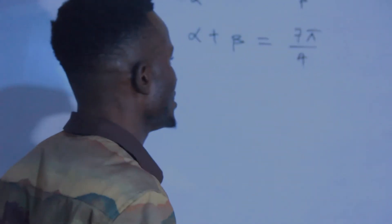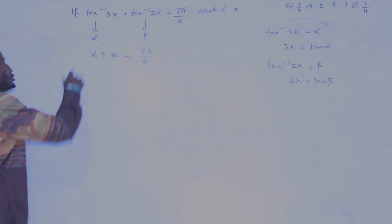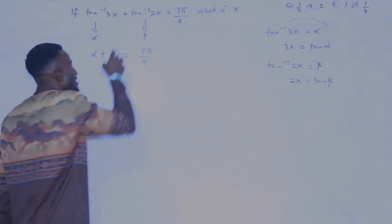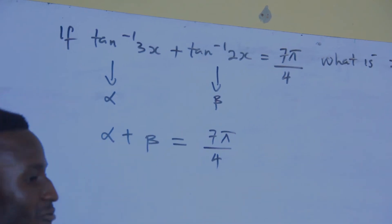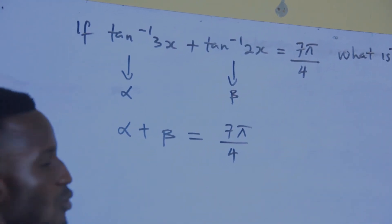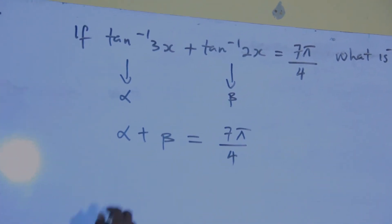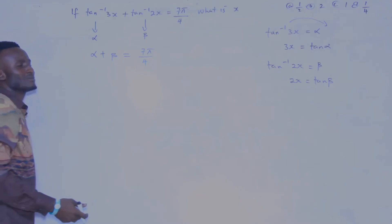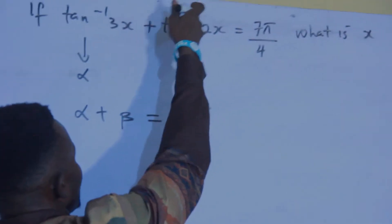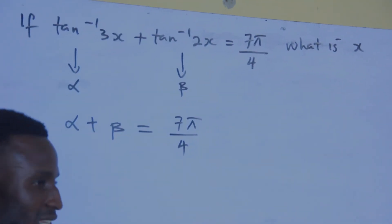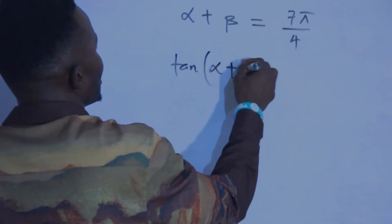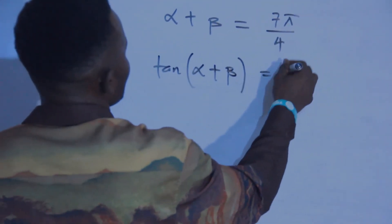Now check this very well. I substituted this to be alpha, so I have alpha here, and I substituted this to be beta, so I have beta here. It equals seven pi over four. Then let me apply tan to both sides — the reason I can apply tan to both sides is because the question is in terms of tan. So I will now have tan(alpha plus beta) equals tan(seven pi over four).